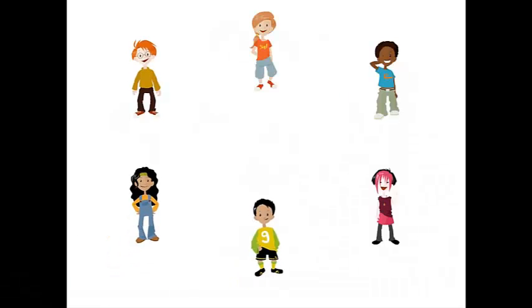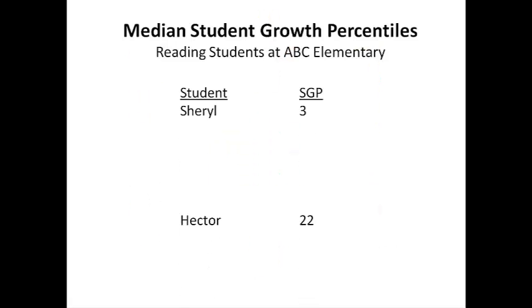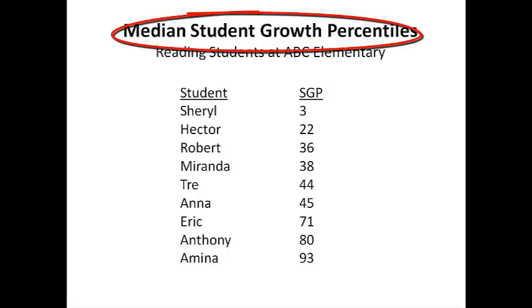Next, let's move from an individual child to the school level. How can we characterize the performance of a school based on the individual student scores? The Washington student growth model takes all the individual percentiles from a school, ranks them from highest to lowest, and takes the middle percentile. This gives us a median number, which we refer to as the median student growth percentile for that school.